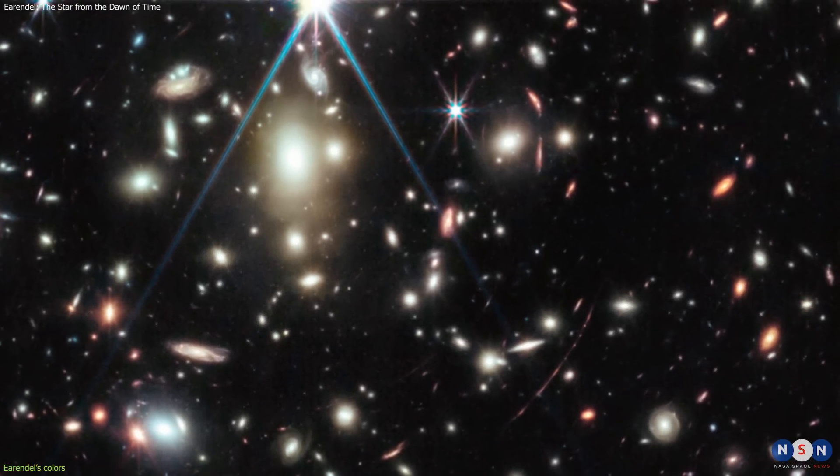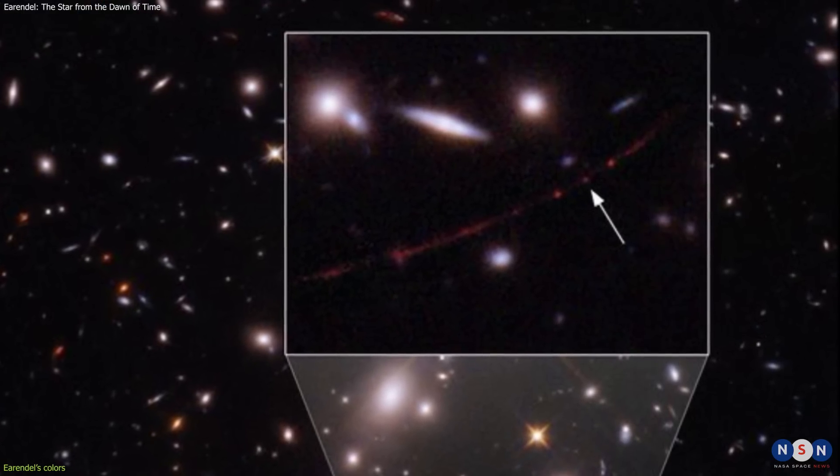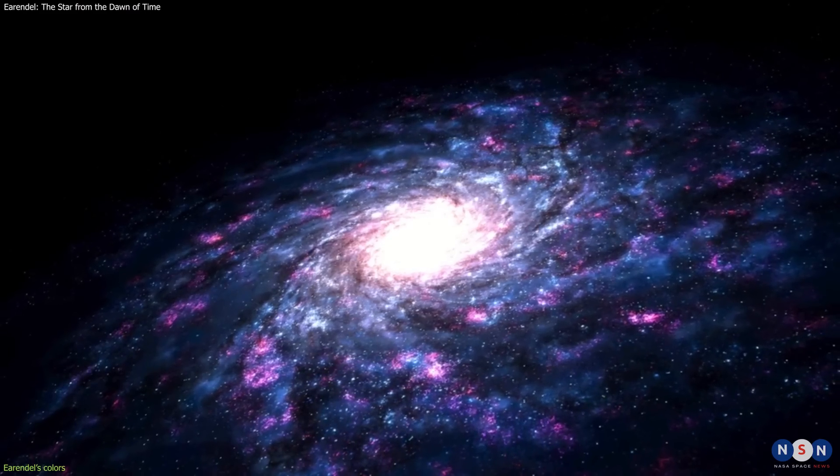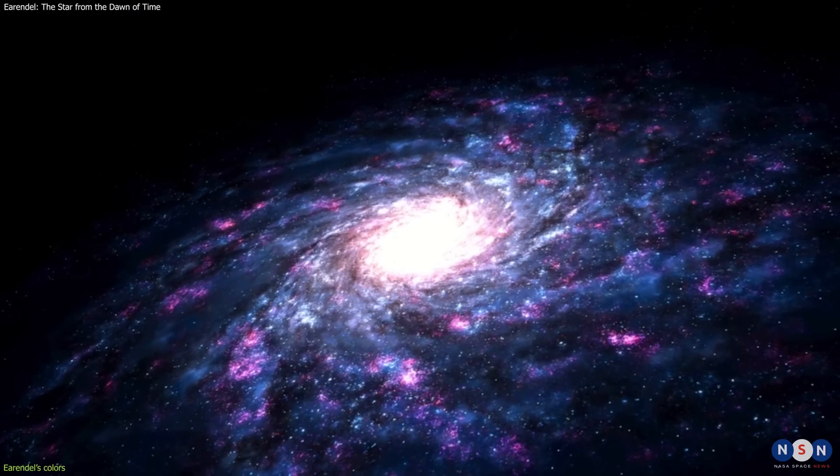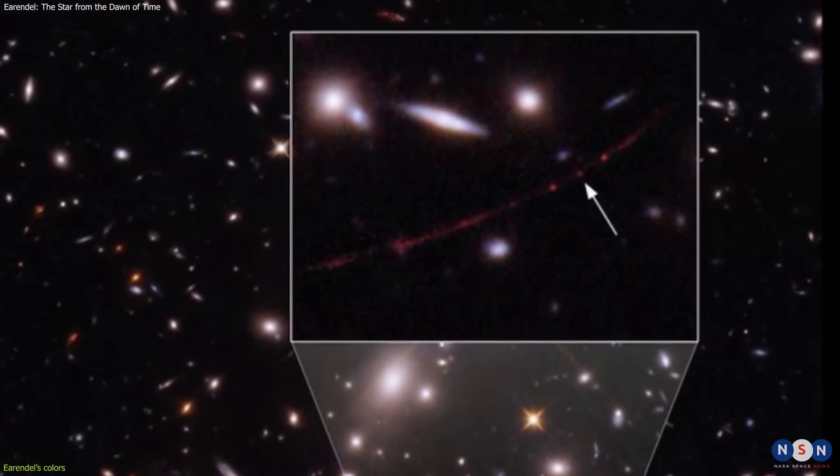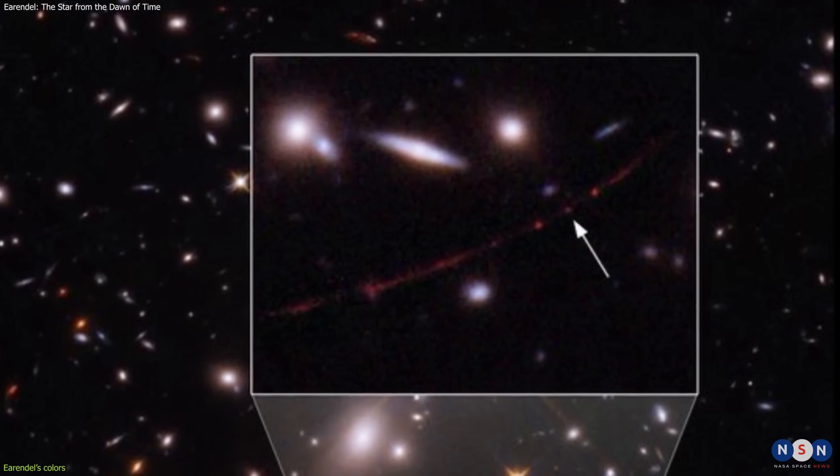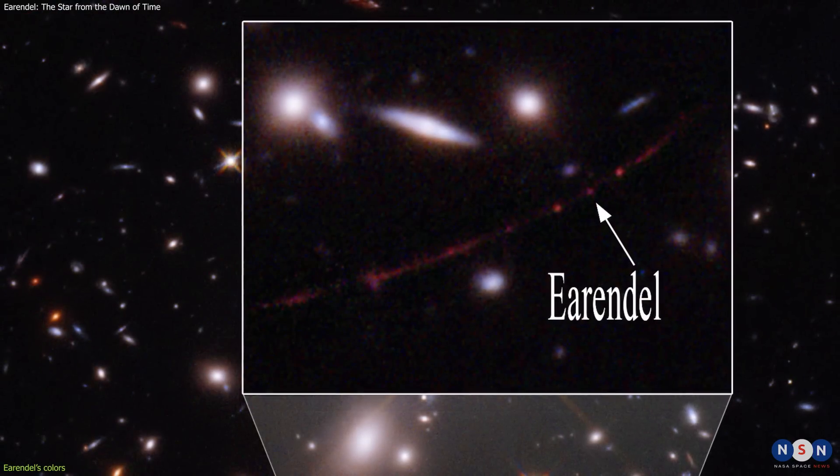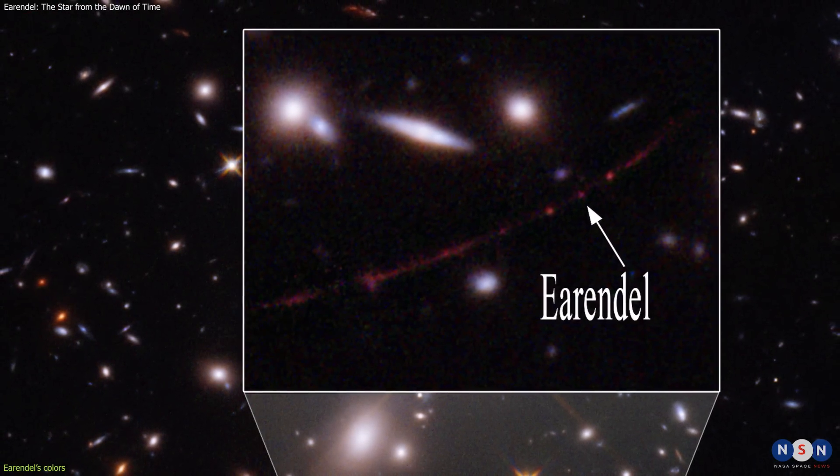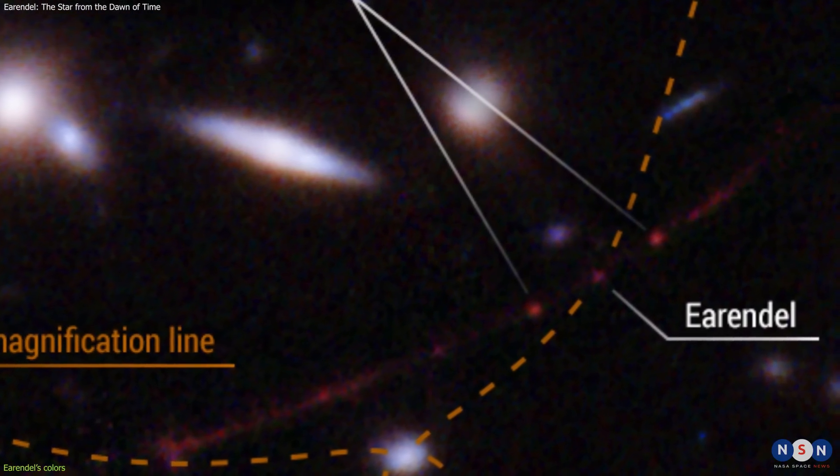One of these lensed arcs is called Sunrise Arc, and it is a galaxy that is also very distant and ancient. It is located about 12 billion light-years away from us, meaning that we are seeing it as it was when the universe was only 1.5 billion years old. Within Sunrise Arc, there is a bright spot that stands out from the rest. This is Earendel, the most distant star ever detected.